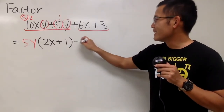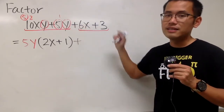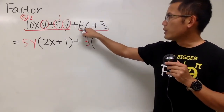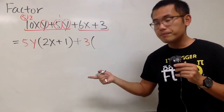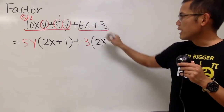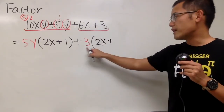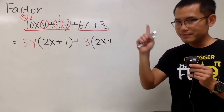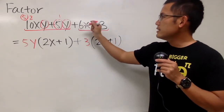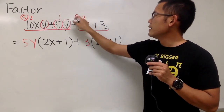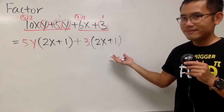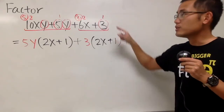For the second part: we have 6 and 3. We know 3 goes into both, so we can factor out the 3. Originally we have 6x — 6 divided by 3 is 2 — so we have 2x. And then plus: originally it was 3, we factor out the 3, so 3 divided by 3 is 1, giving us plus 1. 6 is the same as 3 times 2, so we factor out the 3 and have 2x plus 1 left.